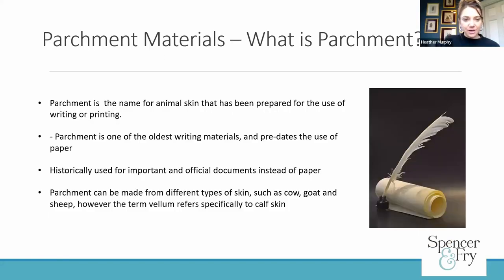Parchment materials. Parchment is the name for animal skin that's been prepared for the use of writing or printing. It's one of the oldest writing materials and predates the use of paper. Historically it's been used instead of paper for important documents like religious texts, public laws, and land records, due to its strength and durability — it's very strong and the material lasts very well. Parchment can be made from different types of skin such as cow, goat, and sheep skins, but the term vellum refers specifically just to calf skin.